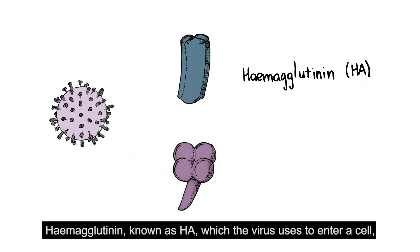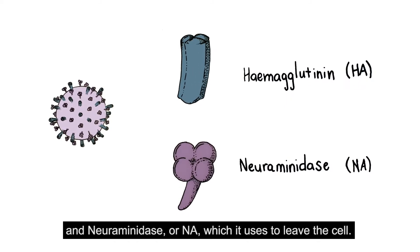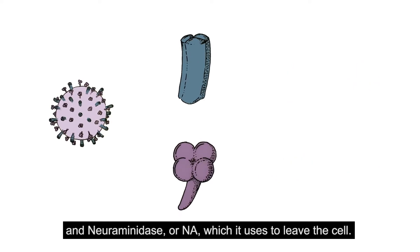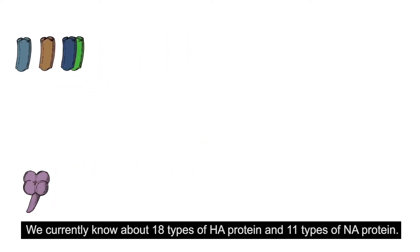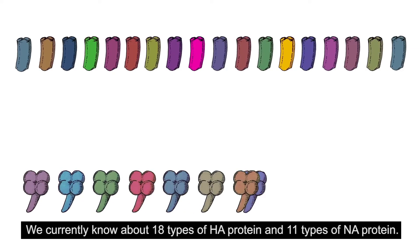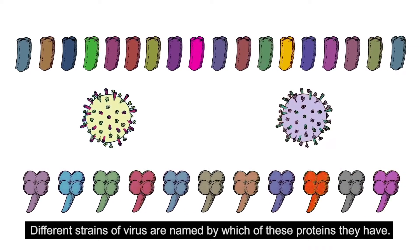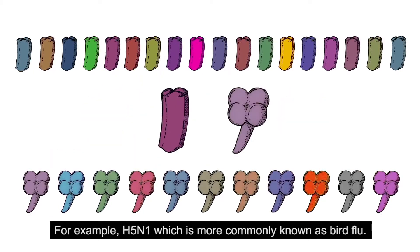Hemagglutinin, known as HA, which the virus uses to enter a cell, and neuraminidase, or NA, which it uses to leave the cell. We currently know about 18 types of HA protein and 11 types of NA protein. Different strains of virus are named by which of these proteins they have.